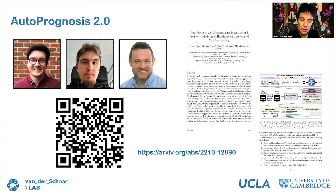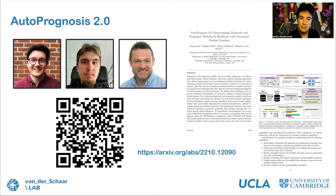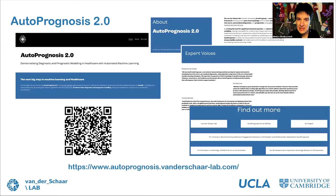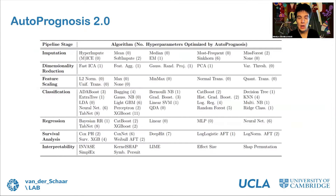The original version of AutoPrognosis required quite a lot of improvements. We have built AutoPrognosis 2.0 together with Fergus, Bogdan — a machine learning engineer in our lab — and our clinical collaborator Professor Eoin McKinney. You can read the paper and see the software at the website dedicated to AutoPrognosis.